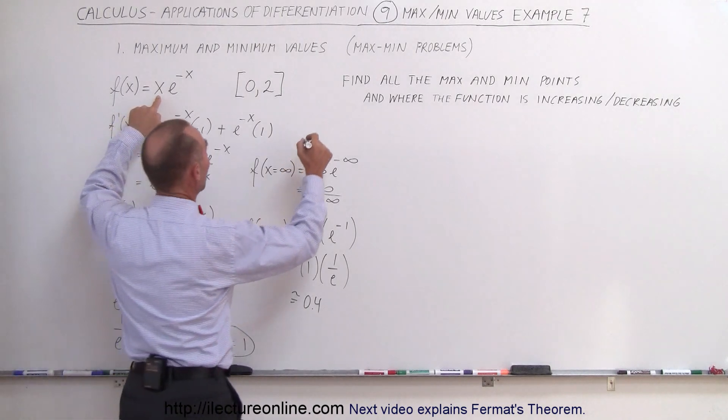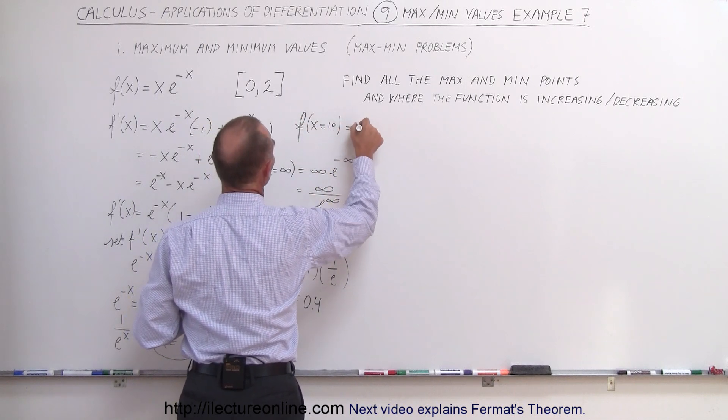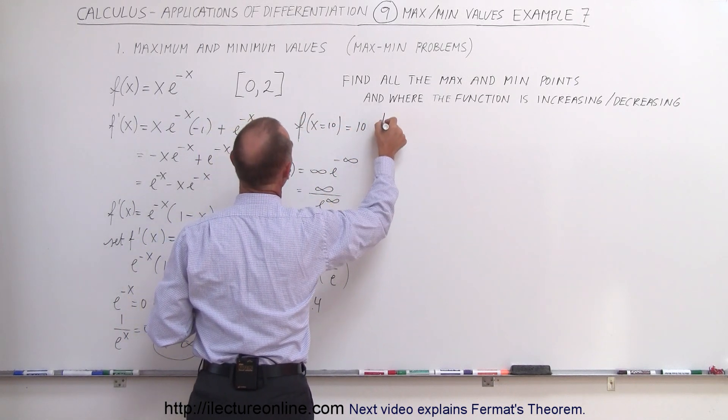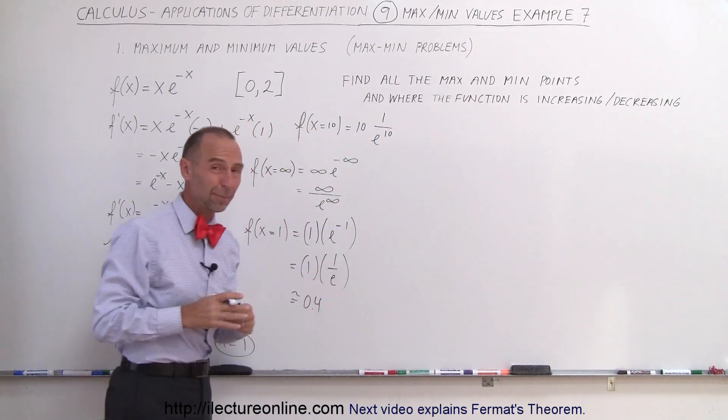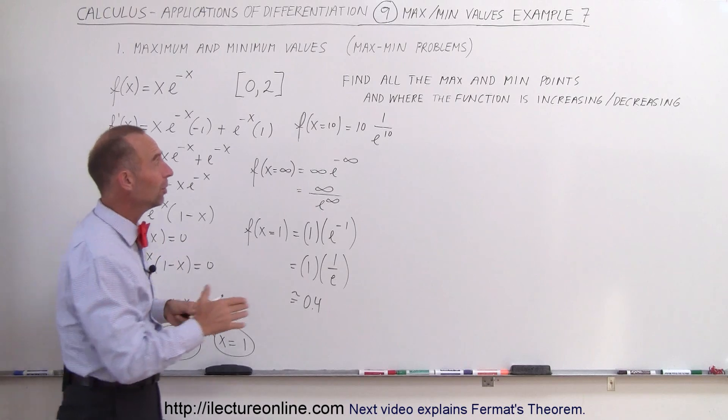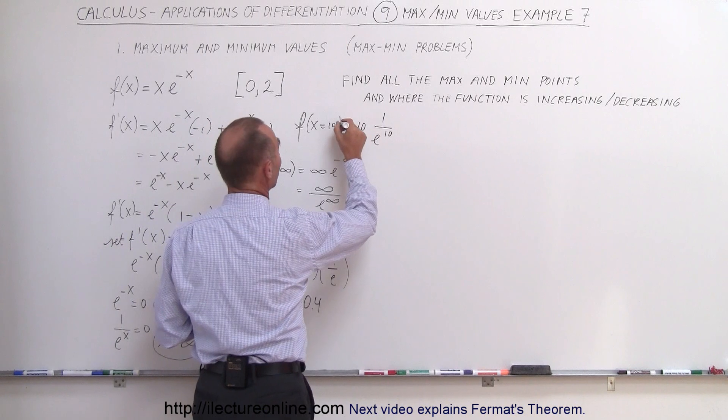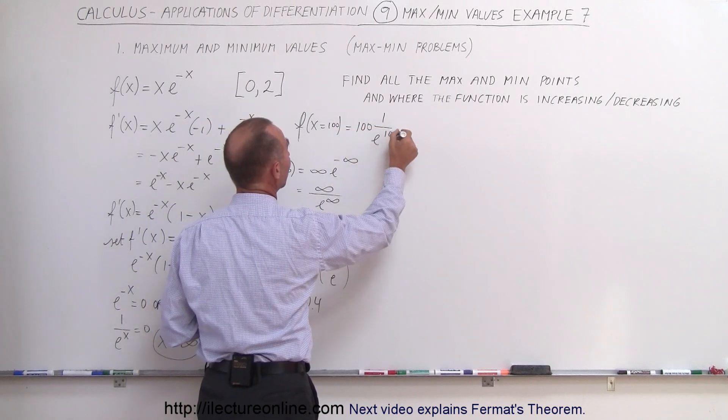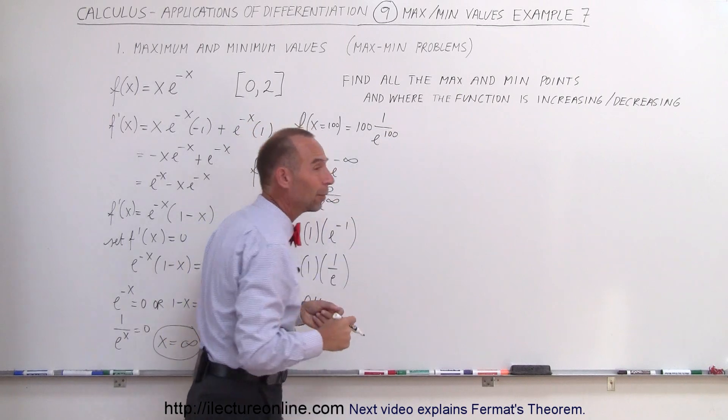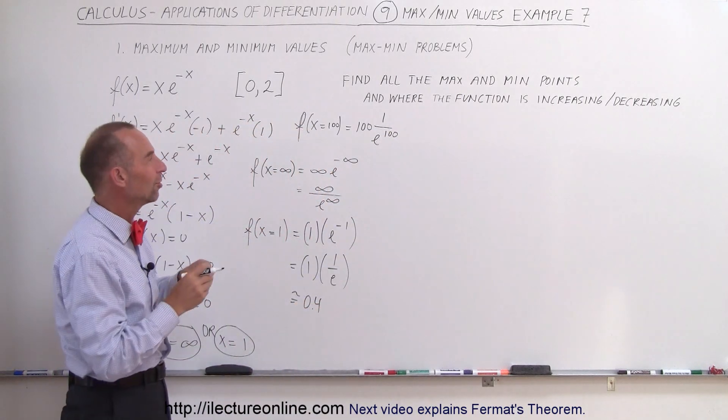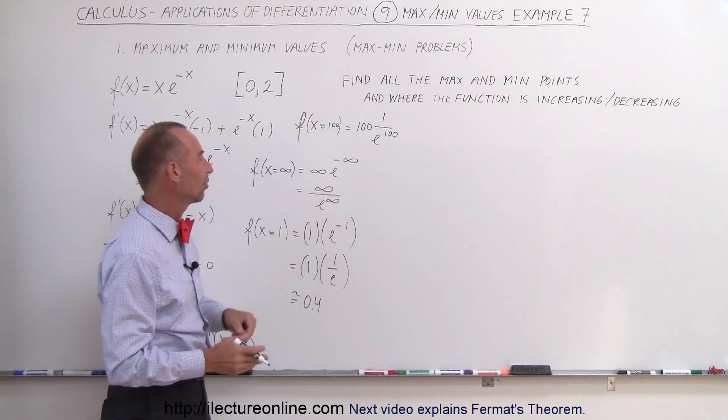For example, f(10) = 10·(1/e^10). Now e^10 is a very large number, so 10 divided by a very large number becomes a very small number. What if we make this 100? 100·(1/e^100) is an even smaller number. You can see this very quickly converges to 0 because the denominator gets so large.